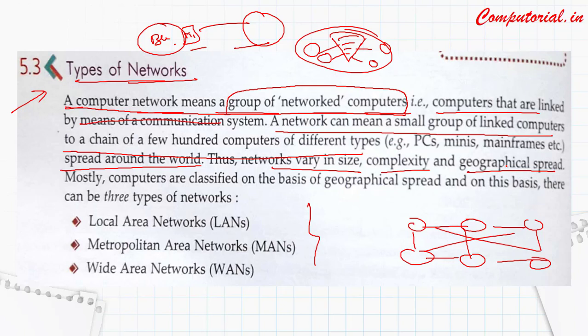If we talk about global reach or geographical spread, it means a computer network can span two buildings, two rooms, two cities, two states, or two countries. Networks are classified on the basis of geographical spread. On this basis, there can be three types of network. If we talk about geographical spread, we have three types: LAN, MAN, and WAN.